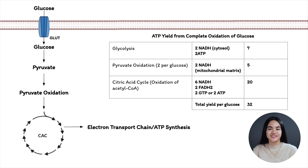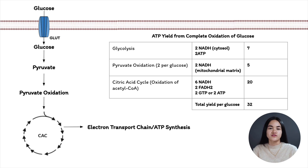That is the citric acid cycle. In this lecture, we learned how pyruvate is transported into the mitochondrial matrix and converted to acetyl-CoA, broke down the eight reactions of the cycle, and calculated the total ATP yield of 32 per glucose molecule oxidized under aerobic conditions.